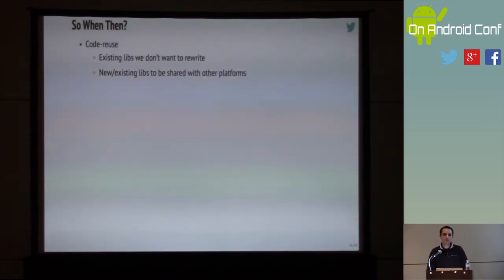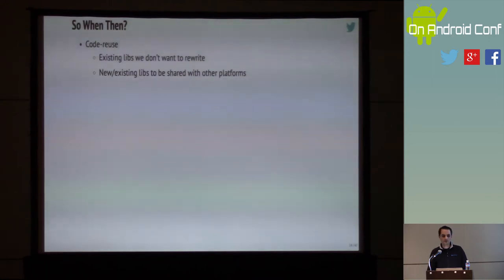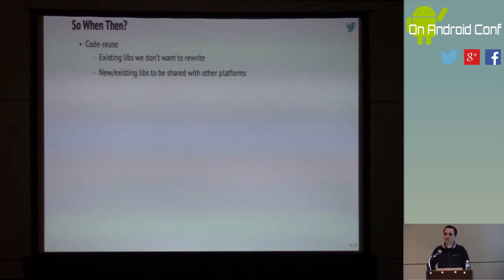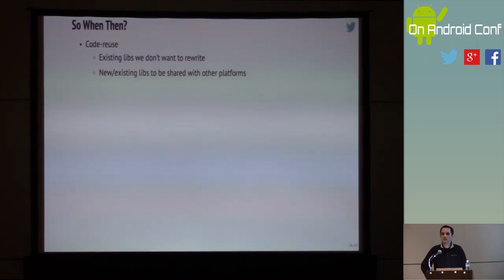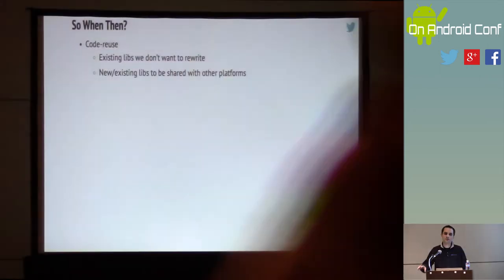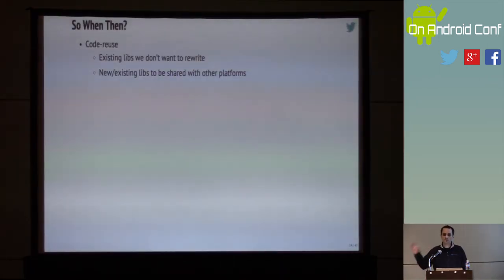So when should you go native? The biggest win — to justify the increased complexity and brittleness — is code reuse. If you have some piece of code that someone else wrote, proven to work well and used successfully elsewhere, you shouldn't just rewrite it in Java for fun. You should try to reuse it, especially if that code is self-contained and you can create a nice thin wrapper around it.